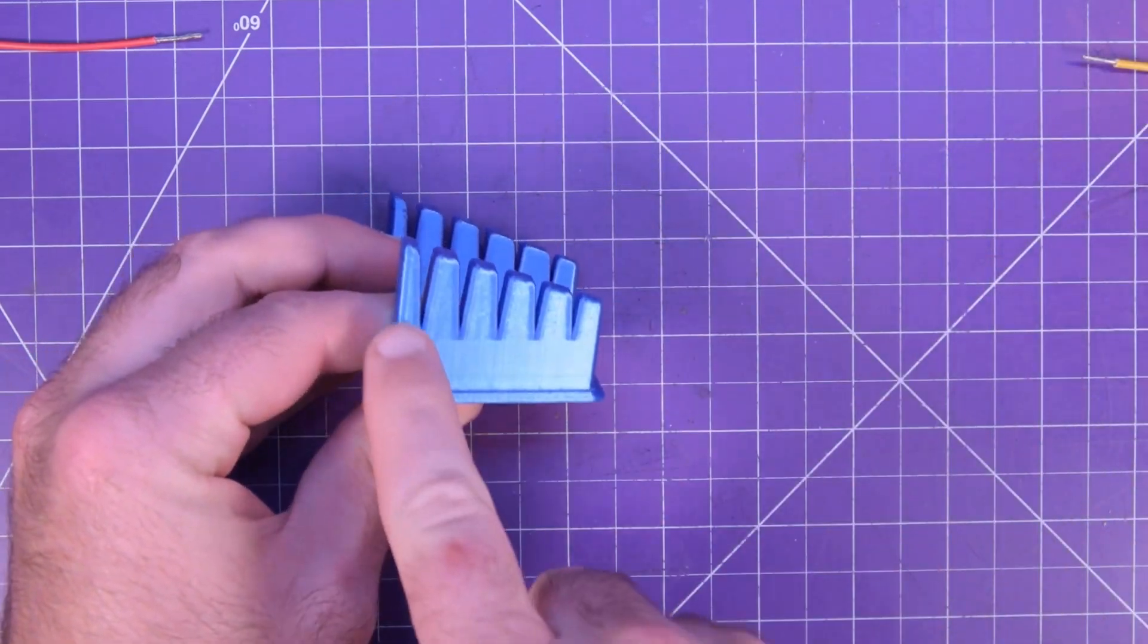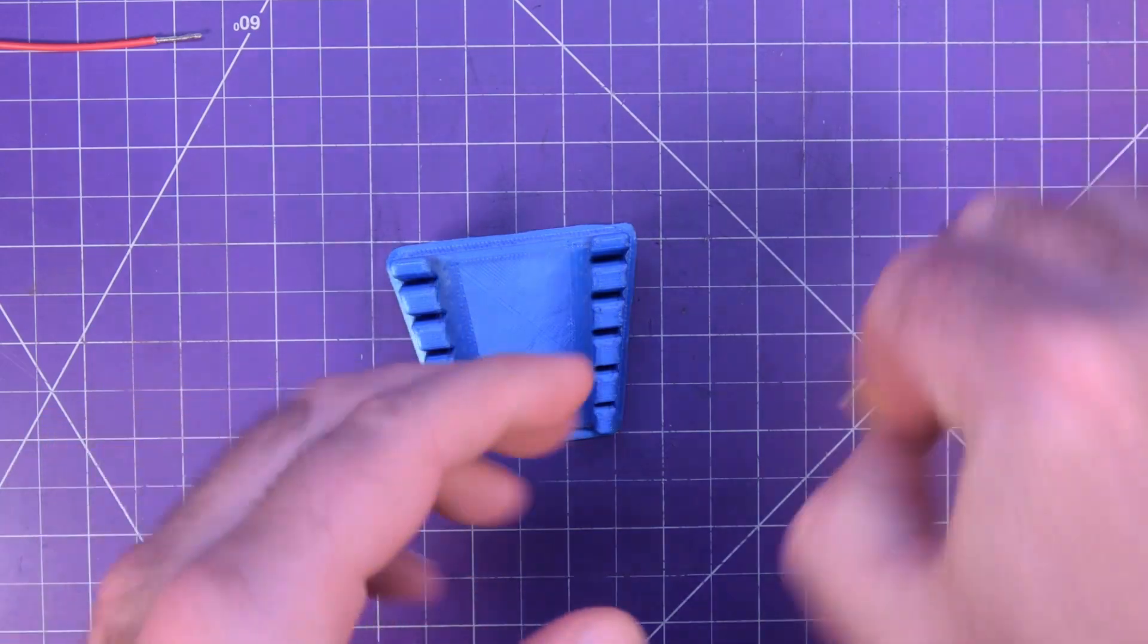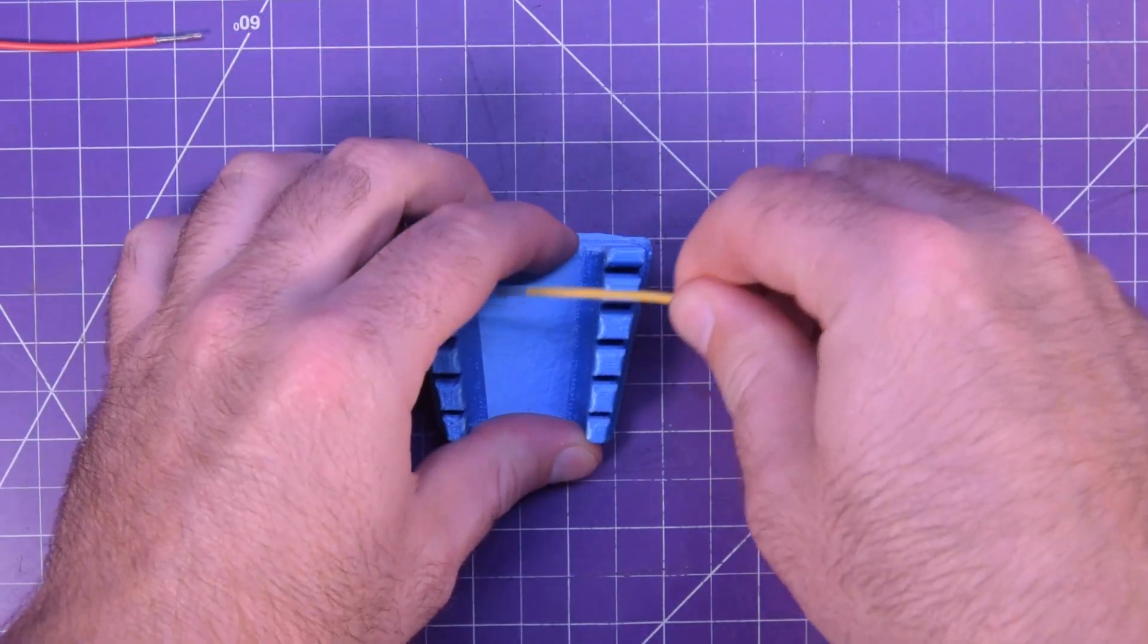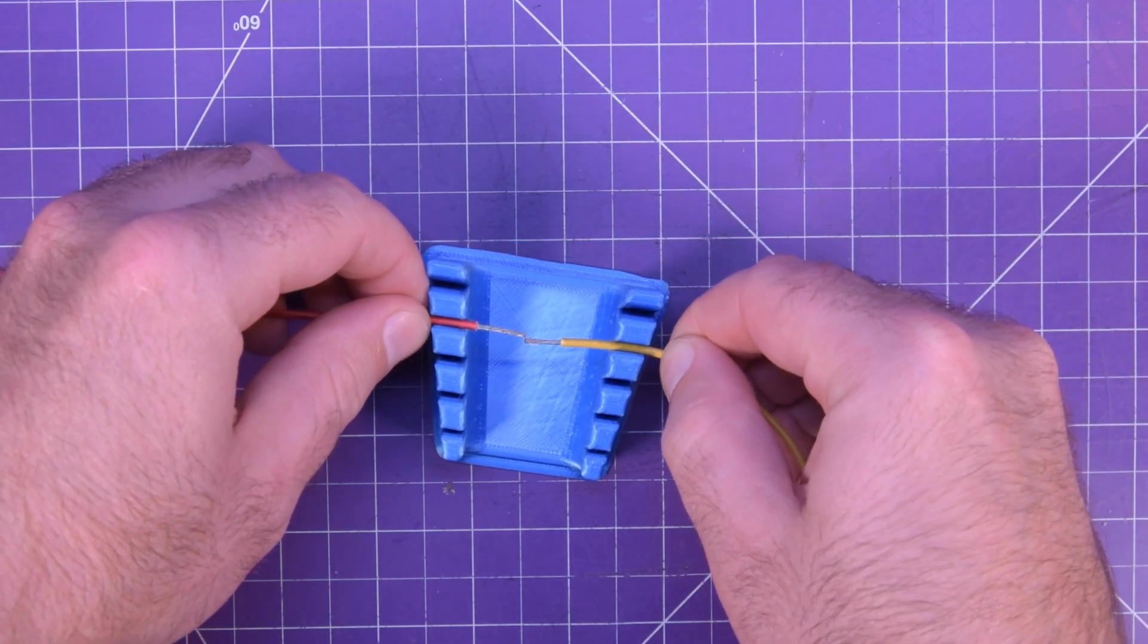So what it is, is just a series of these triangular holes, and you would jam your wires in here, and you can jam up two wires so that they butt up, so you can do a butt join.